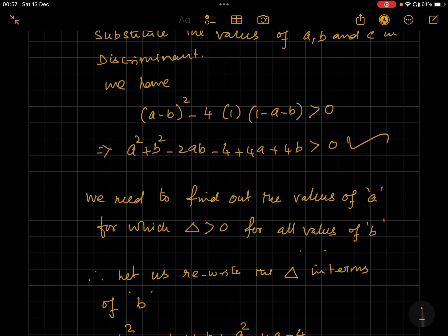values of a, b and c in the discriminant. We have this inequality, so this is fine. Now, we want for all values of b, for given value of a, that the discriminant should always be positive. So let's try to construct the